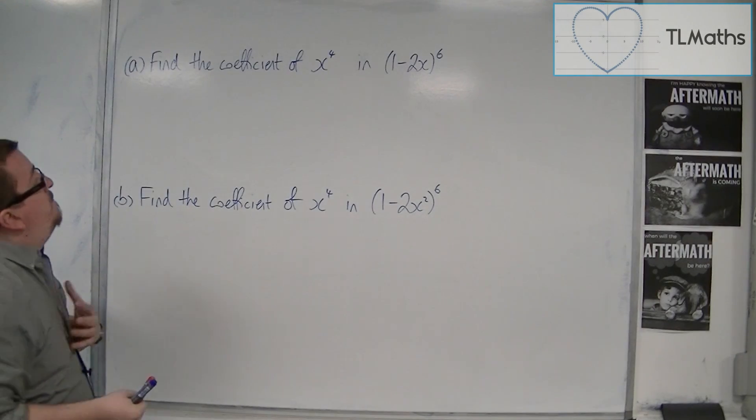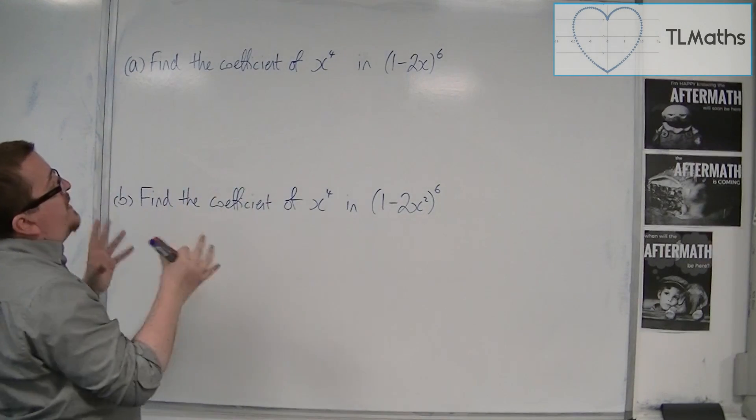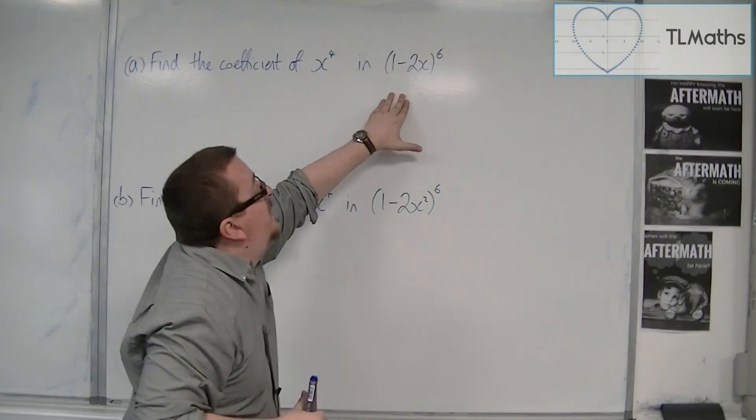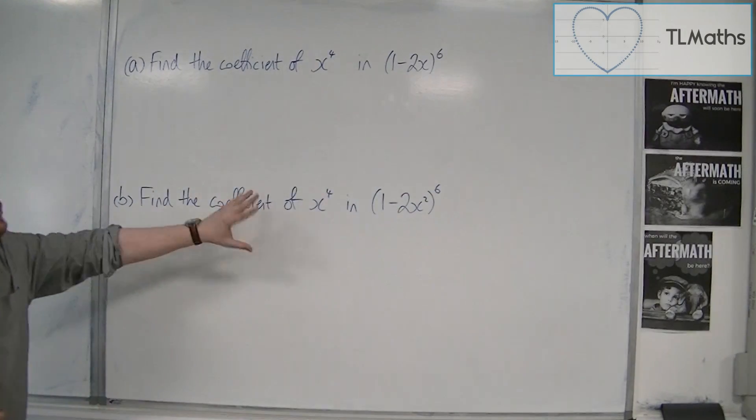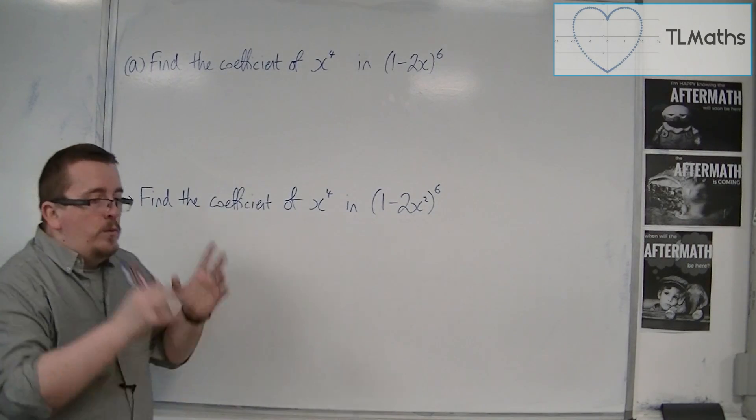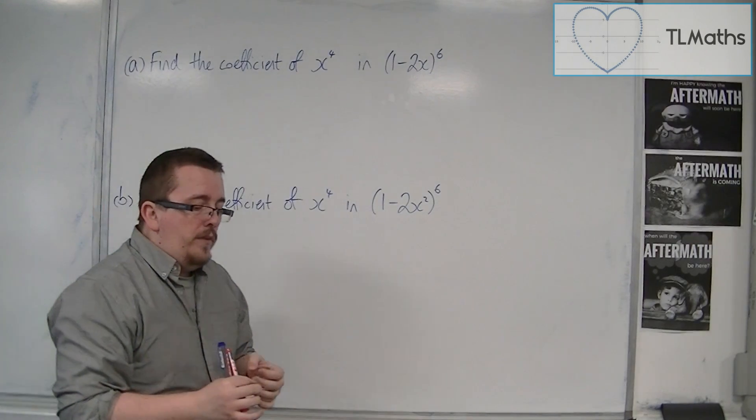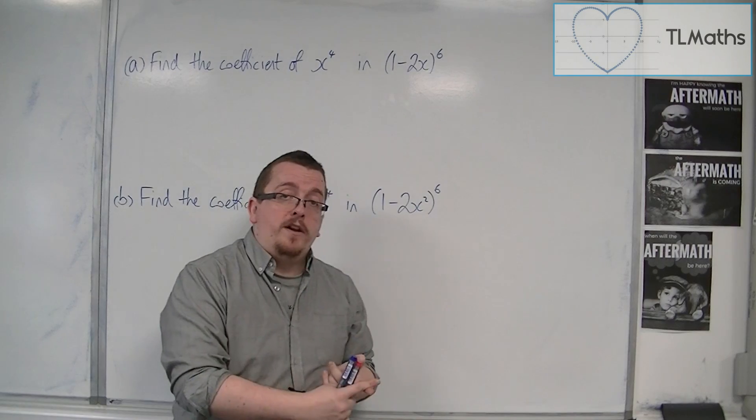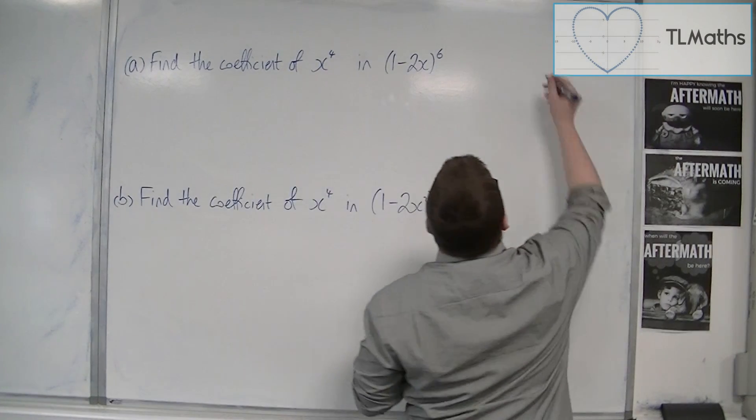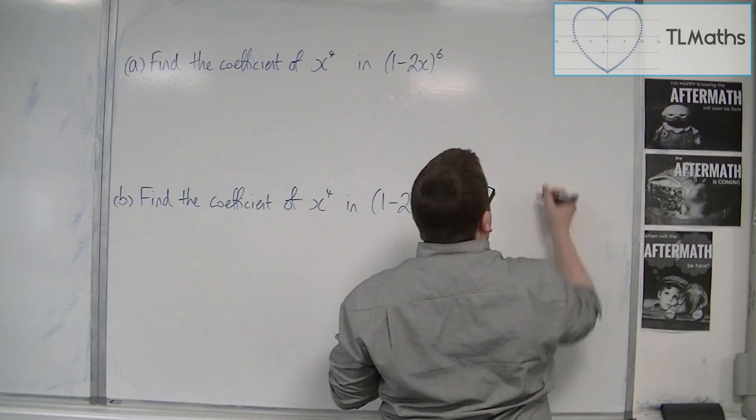So what I'm going to look at is finding the coefficient of x to the 4 in (1 minus 2x) to the 6. And I'm going to slightly change it around for this next bit. So it would make sense that I would write out Pascal's triangle. So if I do that, let's write it down here.